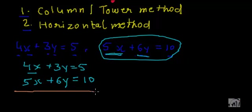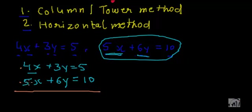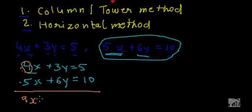Now I'll tell you how to add. As we have learned in earlier videos, we can add only like terms. So we'll add 4x and 5x — that is the reason why we want them in the same column. In algebra we can add only like terms, so we want all like terms in the same column to make addition easy. So 4x plus 5x: we just add their coefficients. 4 plus 5 is 9, and the variable part remains as it is — 9x.